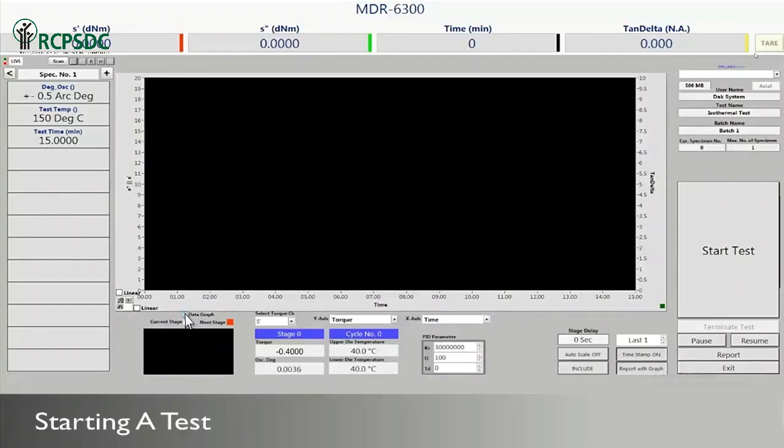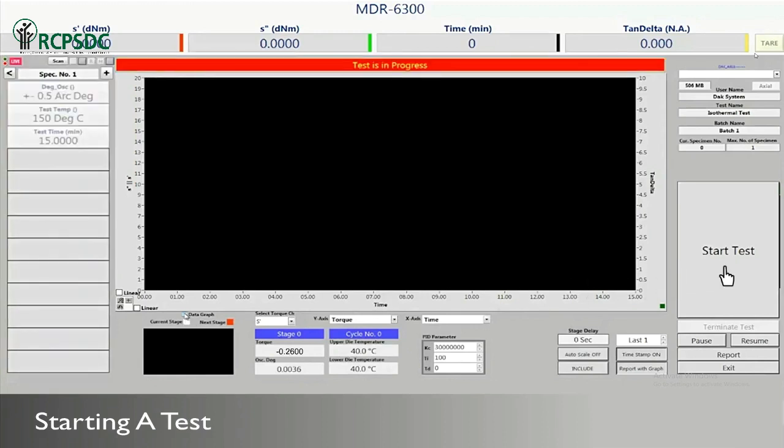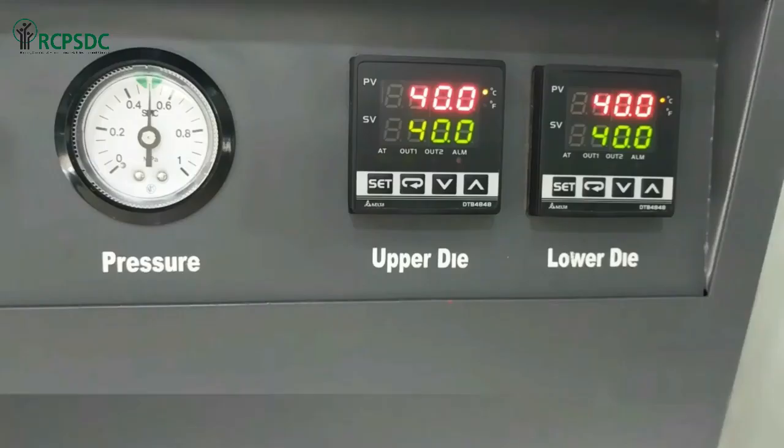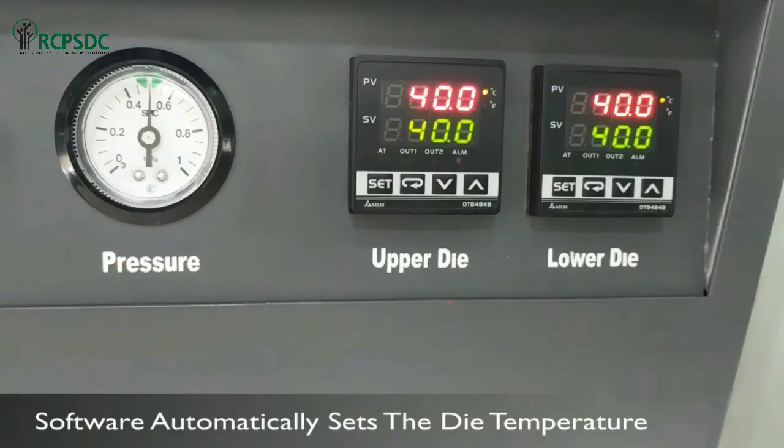Now test software interface will open. You need to click start test tab for starting the test. The software will automatically set the pressure and temperature of the upper and lower die.